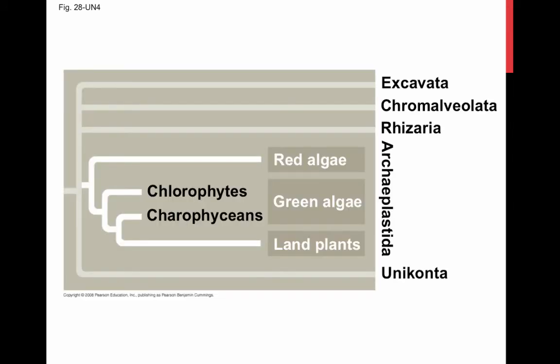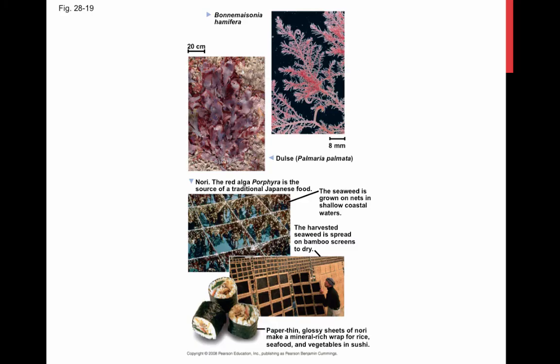Red algae and green algae are the closest relatives of land plants. Over a billion years ago, a heterotrophic protist acquired a cyanobacterial endosymbiont. The photosynthetic descendants of this ancient protist evolved into red algae and green algae, and land plants are descended from the green algae. Red algae are reddish in color due to an accessory pigment that masks the green of chlorophyll. Red algae can photosynthesize at deeper depths and are the most abundant type of algae in the coastal waters of the tropics.